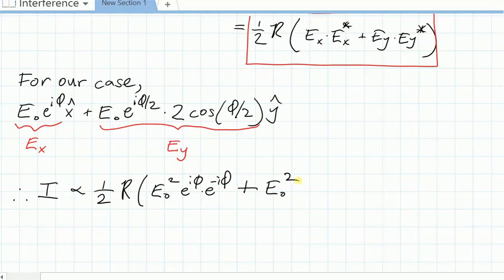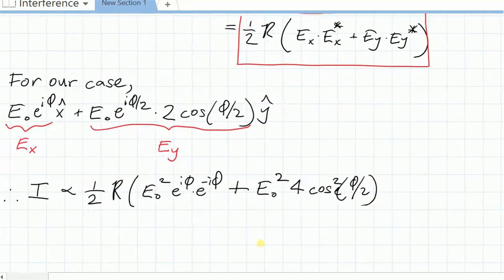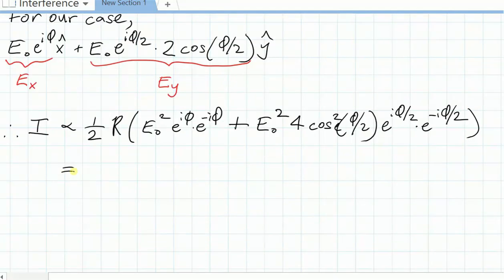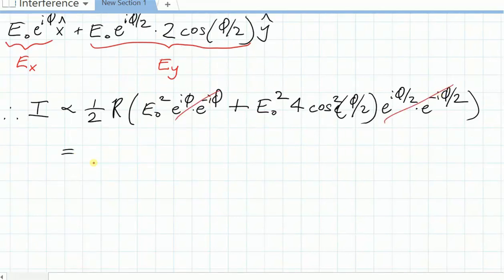Let's do the e y term. We're going to get again an e naught squared. We're going to get 4 from squaring the 2. We're going to get the cosine squared of phi over 2. All of those are real numbers from this expression. We're again going to have e to the i phi, in this case over 2, times e to the minus i phi over 2. Write that out a little more with killing some terms. These go away. And you get one half real of e naught squared plus e naught squared times 4 cosine squared of phi over 2.